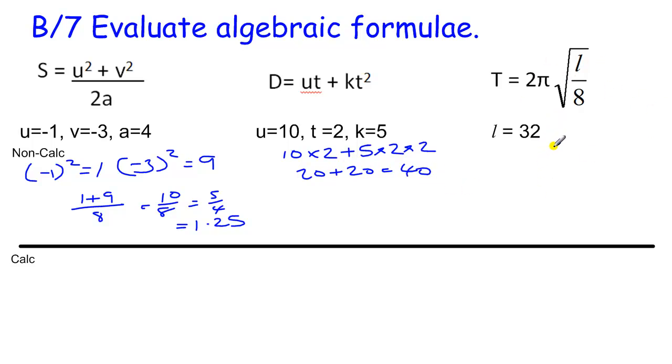With the square root, we just have to be careful to make sure we do the bit inside the square root first. So we've got 32 divided by 8, which is 4. So we've got 2π times the square root of 32 over 8, which is 4, which is just square root of 4. Square root of 4 is 2, so we've got 2 lots of 2π, which is 4π.